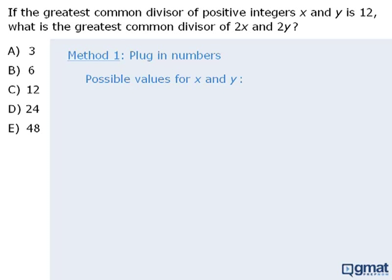Well, some possible values include 24 and 36, 12 and 24, 12 and 12, and so on. Now it doesn't really matter what pair of numbers we choose, but our calculations will be easier if we choose the smallest values, which are 12 and 12.